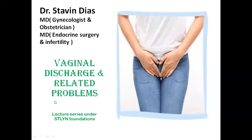The reason I've chosen this particular topic is that many women have a vaginal discharge and it is quite common. There are also different types of vaginal discharges that a woman goes through during her entire lifetime. It is very important for every woman to know about this discharge — apart from the discharge occurring during the menstrual cycle in terms of blood and clots. I'm doing this series of lectures under my Stalin Foundation.